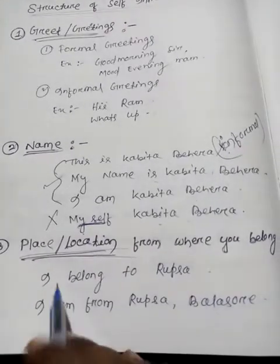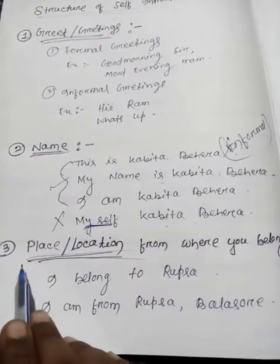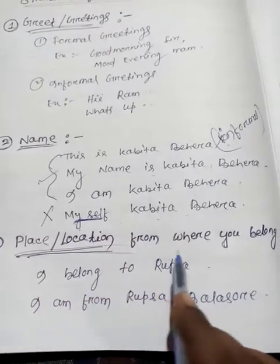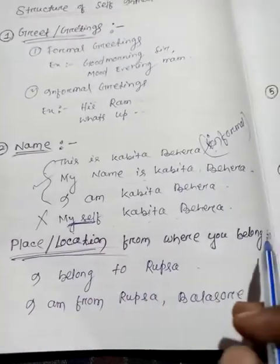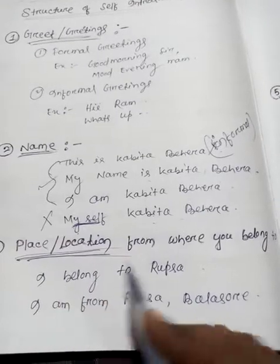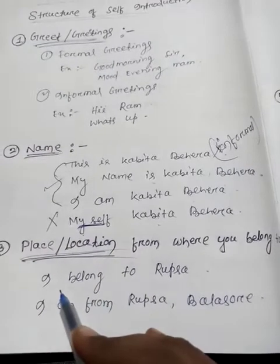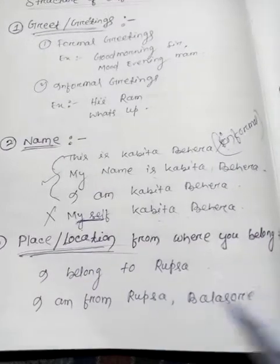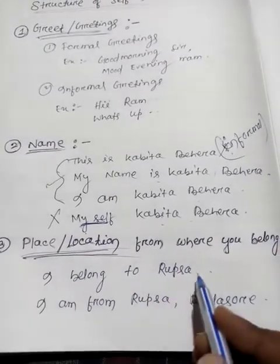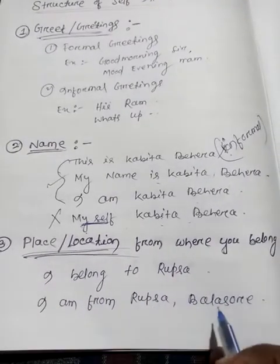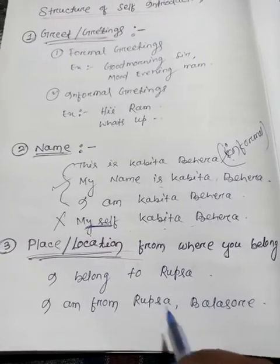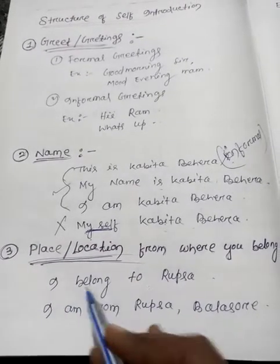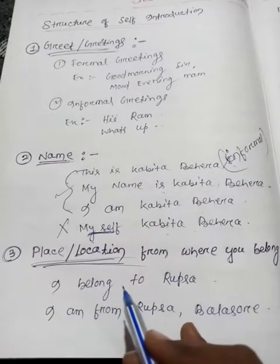After that, let's go to the third step. The third step is place — the location from where you belong to. For example: 'I belong to Rupsa' or 'I am from Rupsa or Baletwar.' This gives the place or location that identifies the speaker.